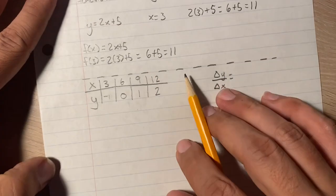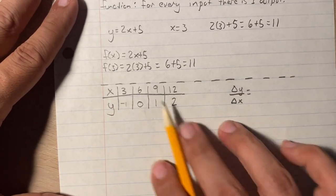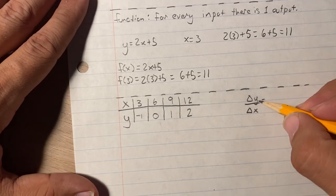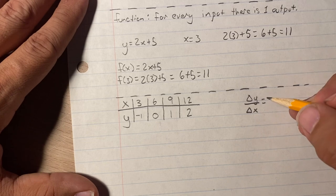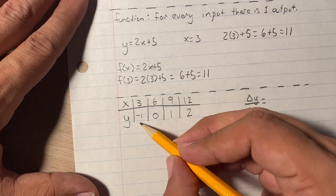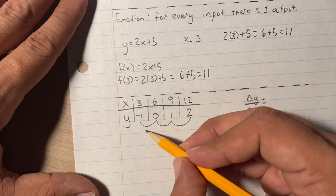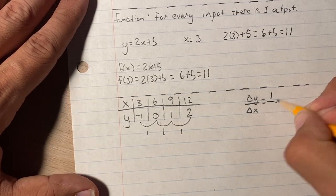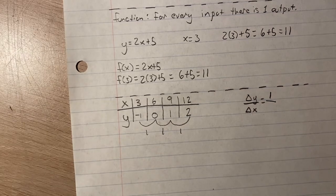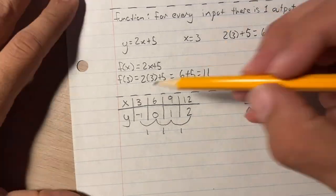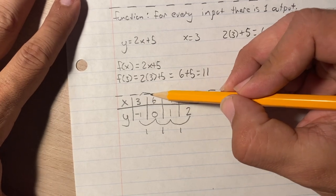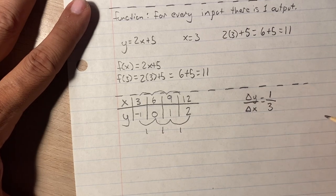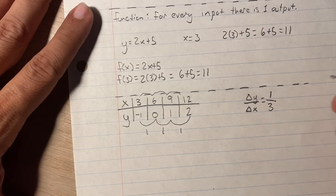Now we're going to write a function, a linear function, given the graph, given the points on the graph. So we have to figure out the slope. The slope is the change in y divided by the change in x. So the change here is up 1, up 1, up 1. So the change in y is positive 1. If it was going down, I'd write a negative number. So the change in x. So that's going 3, 6, 9, 12. It's going up by 3. So positive 3 is the change in x. So now I have the slope.